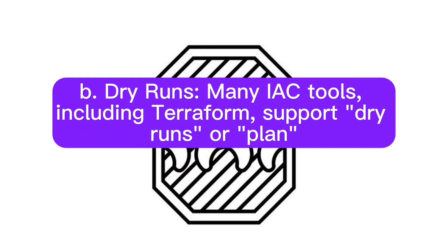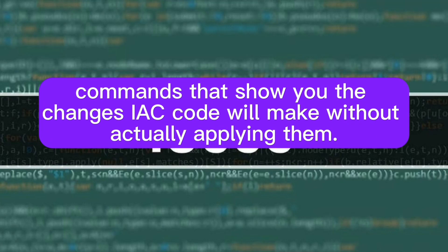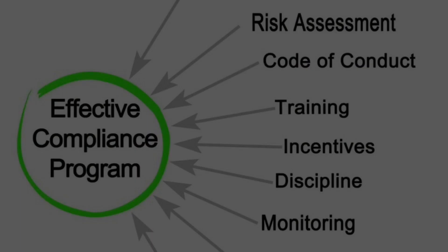B: Dry runs. Many IAC tools, including Terraform, support dry runs or plan commands that show you the changes IAC code will make without actually applying them. Use this to ensure that your code behaves as expected across different clouds.